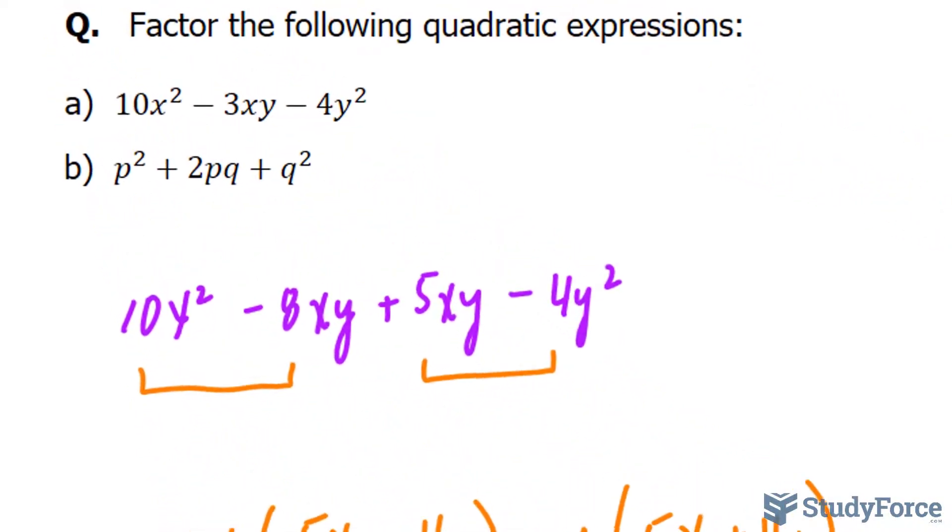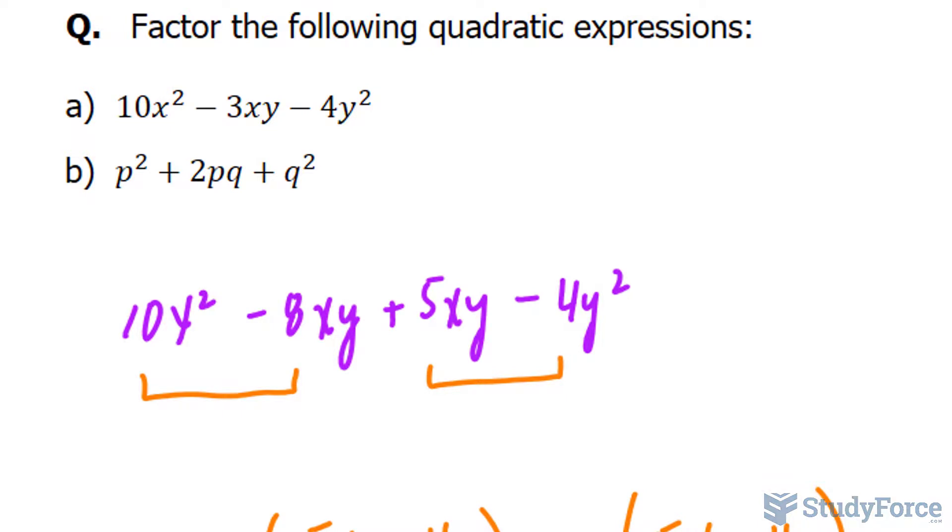Let's move on to question B. Question B, we have p² + 2pq + q². Notice that the leading coefficient, the one associated with p², is 1. This is different than what we saw in question A, where it was 10.